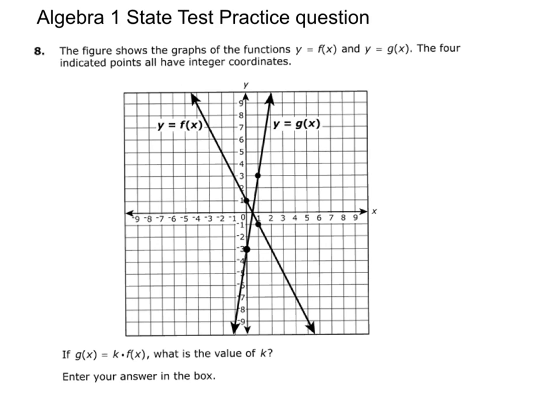What you've got here is number 8 from the Algebra 1 state test. It's a practice question, and this is a non-calculator question. They give you this graph right here, this line, and they call it f of x. And they give you this line right here, and they call it g of x. The figure shows the graphs of the functions f of x and g of x. The four indicated points all have integer coordinates.